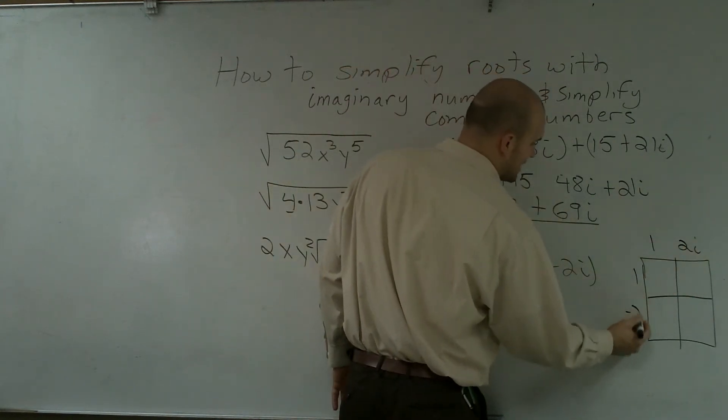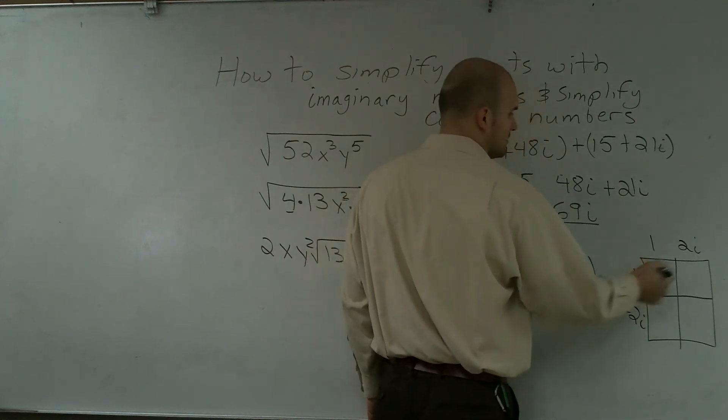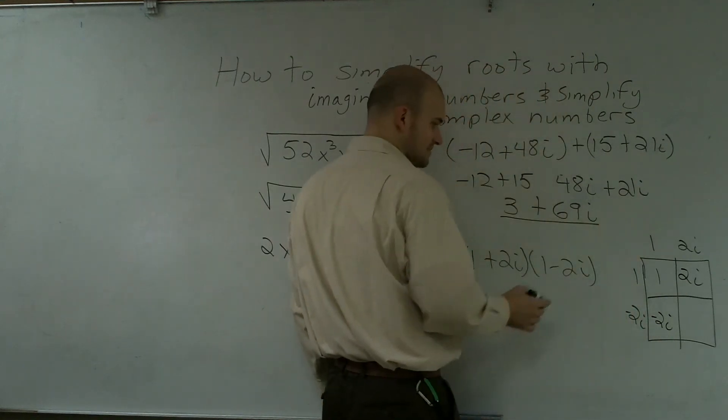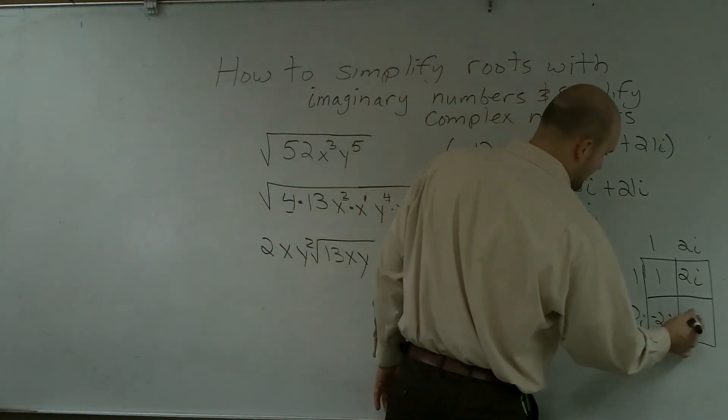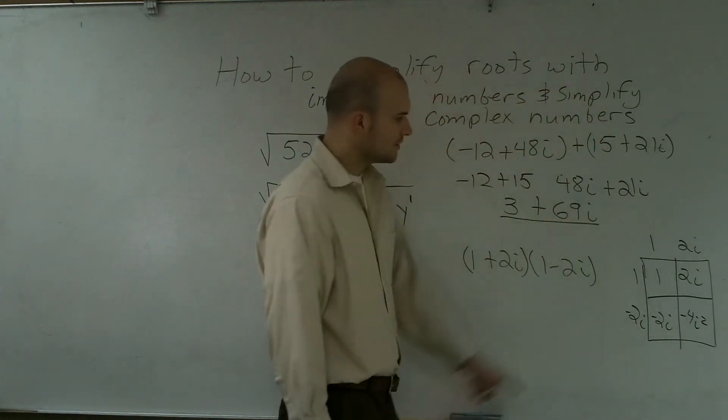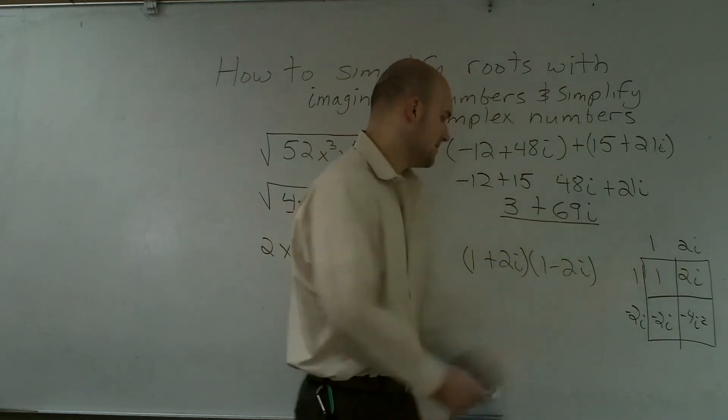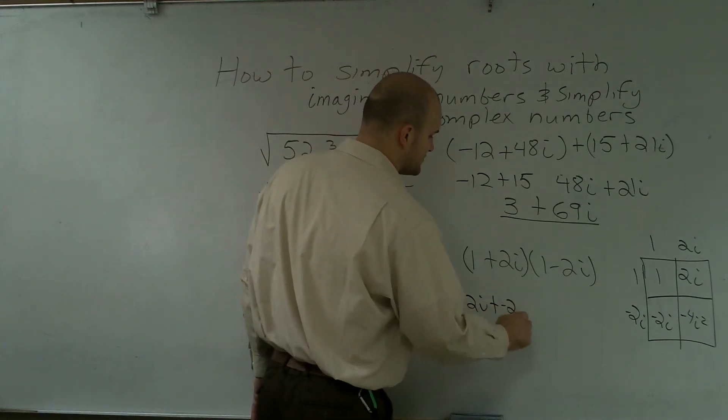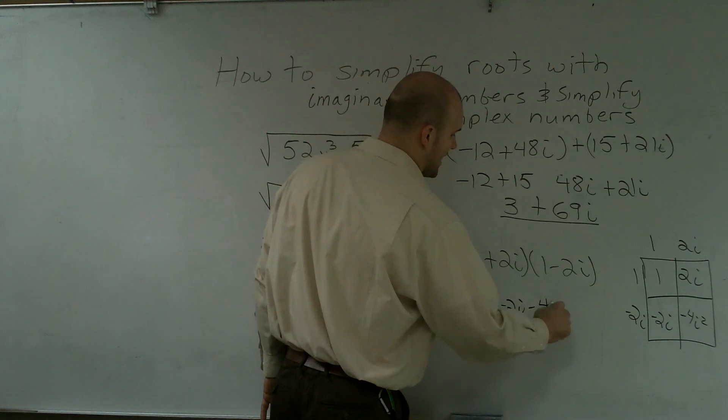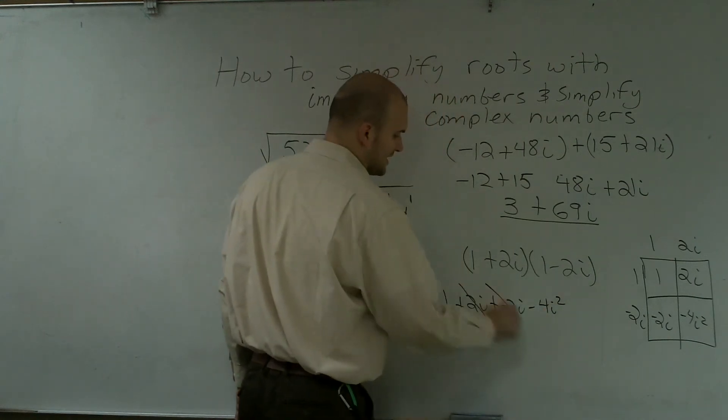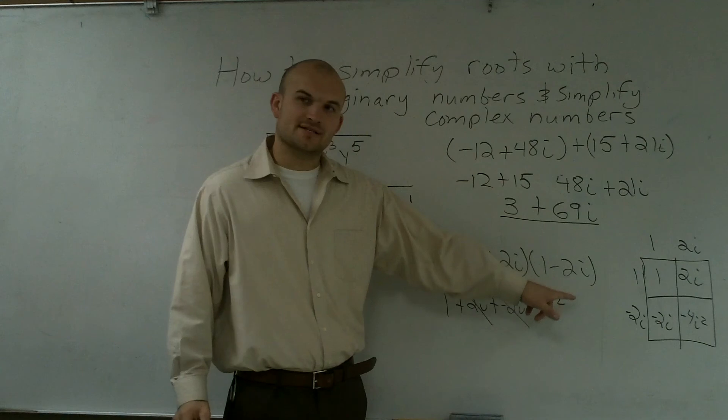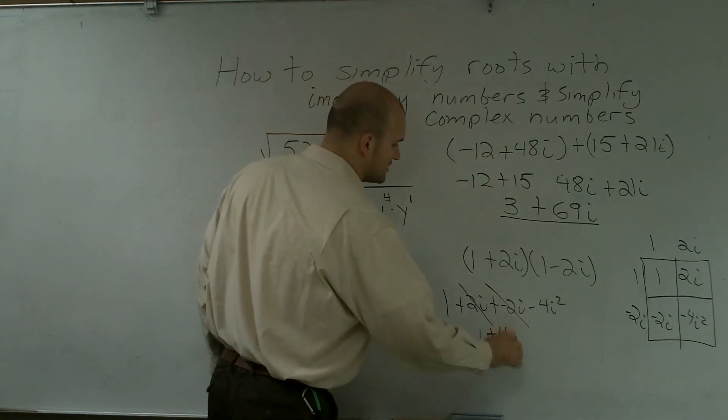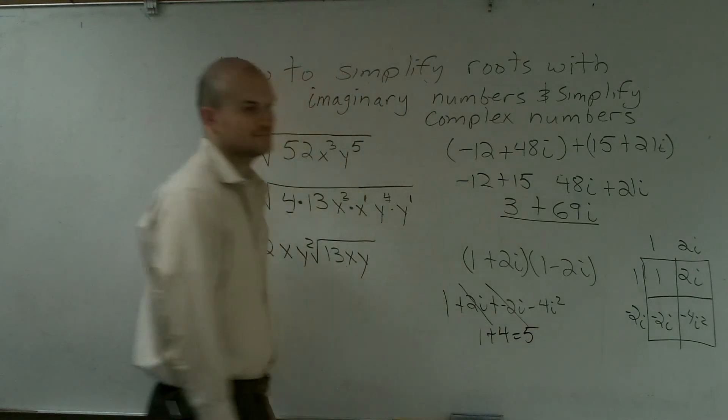1 times 1 is 1, 2i, negative 2i, and this now becomes a negative 4i squared. Well, I know that when you add all these up, you're going to have 1 plus 2i plus a negative 2i minus 4i squared. Well, obviously these are going to cancel each other out. i squared is negative 1. Negative 1 times negative 4 is positive 4. 1 plus 4 equals 5.